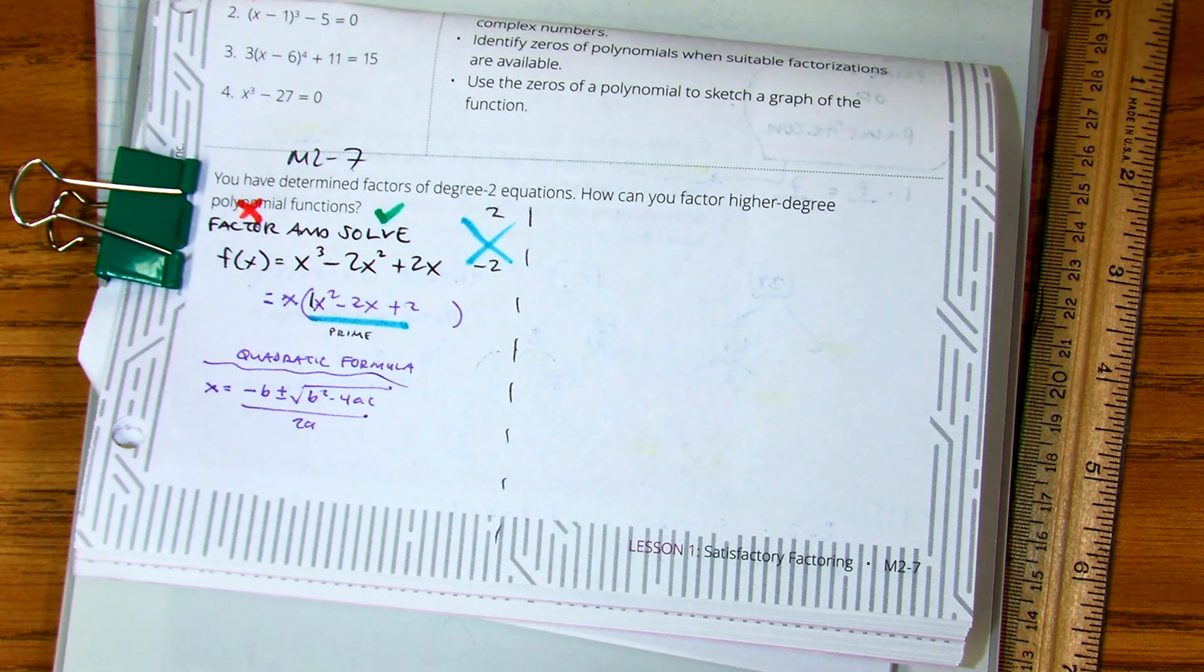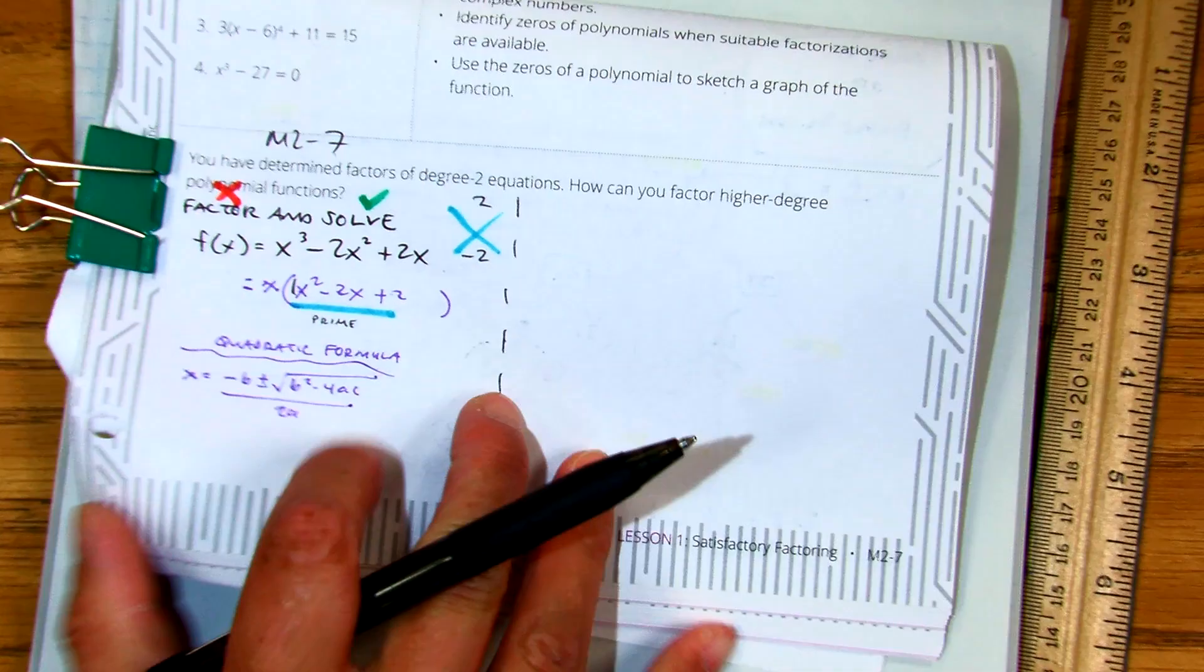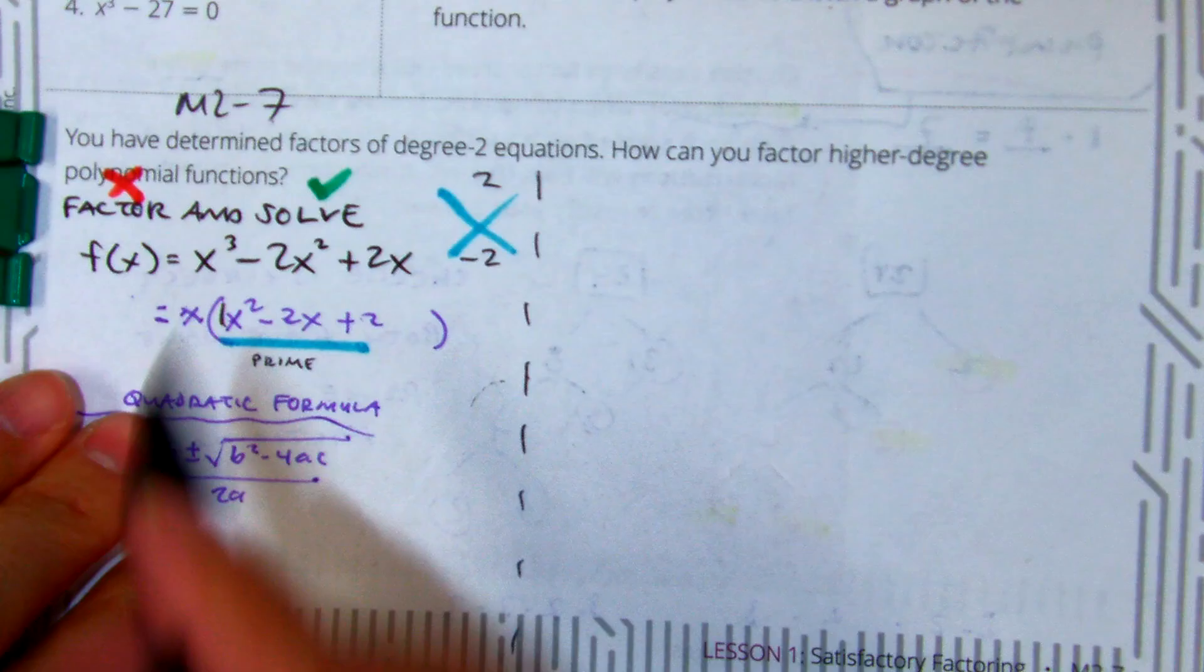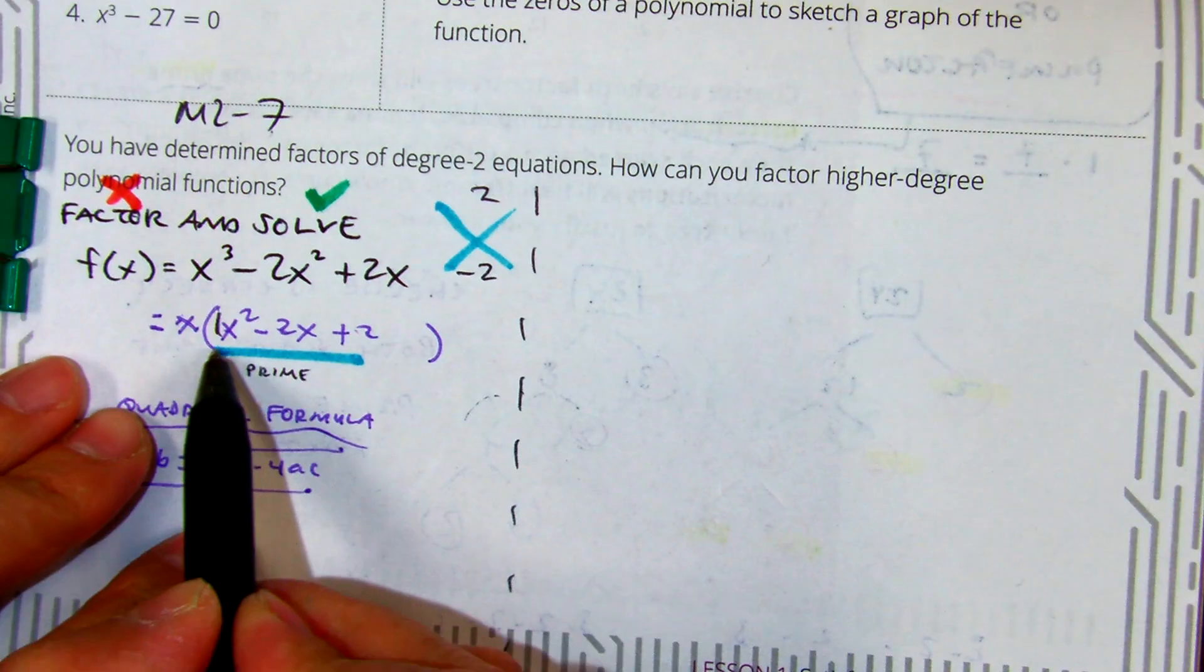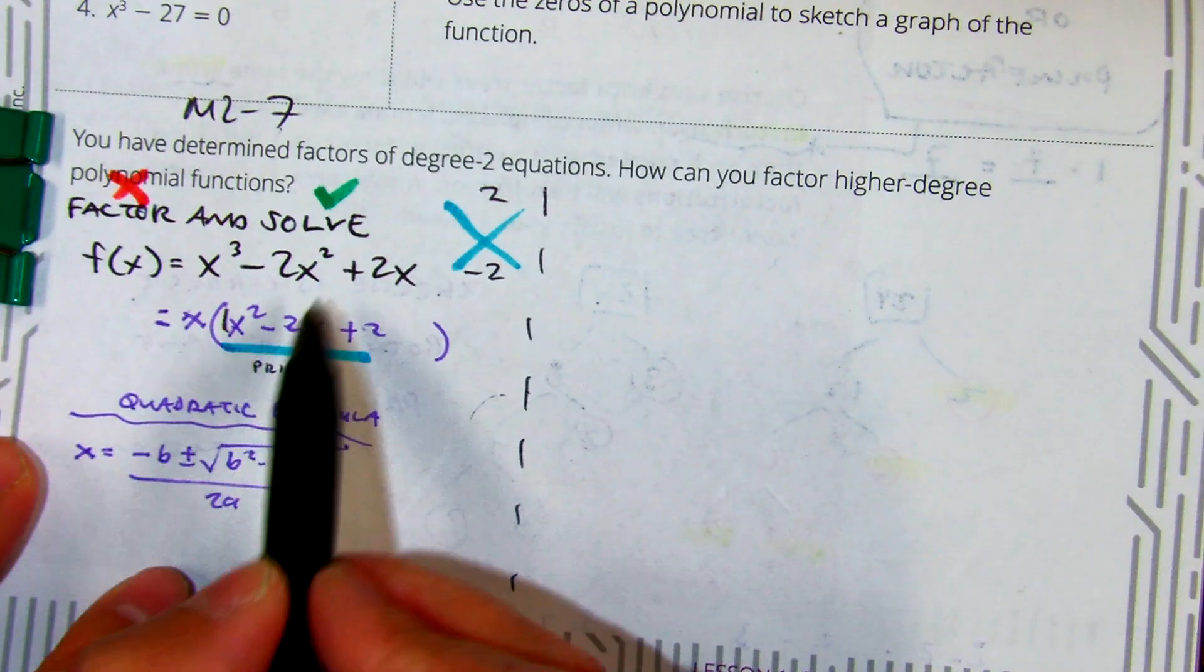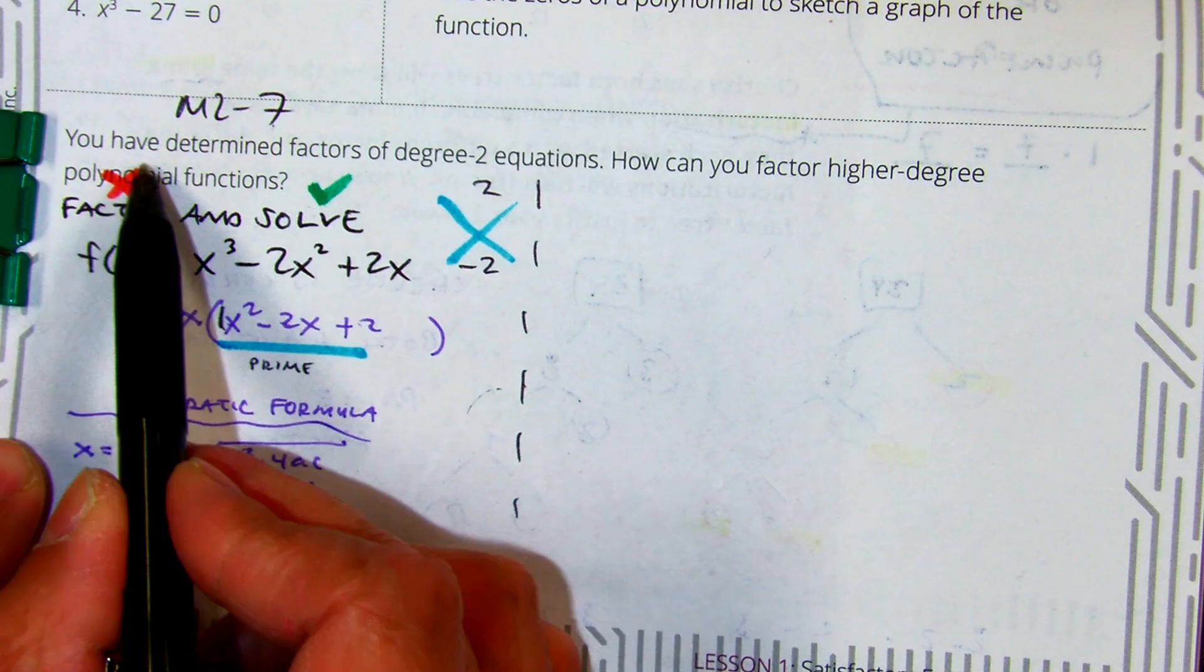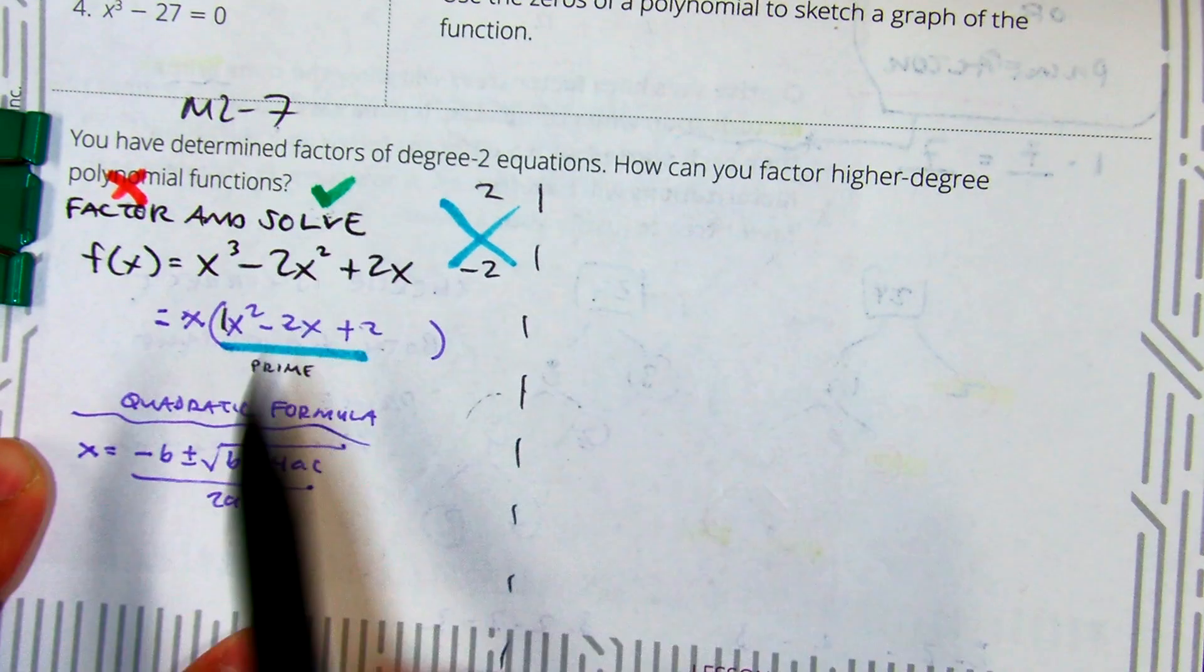So I asked you guys to factor and solve. You factored out a GCF, but what's left is prime. So you can't solve it by factoring, but you can still solve it using the quadratic formula.